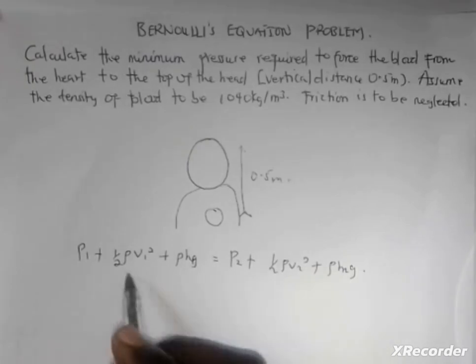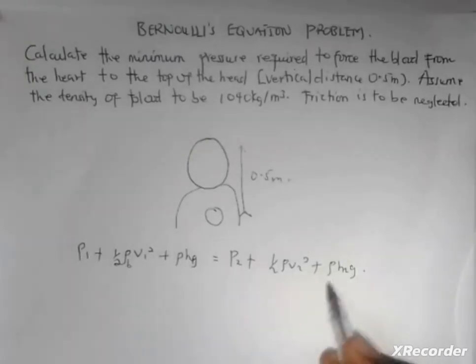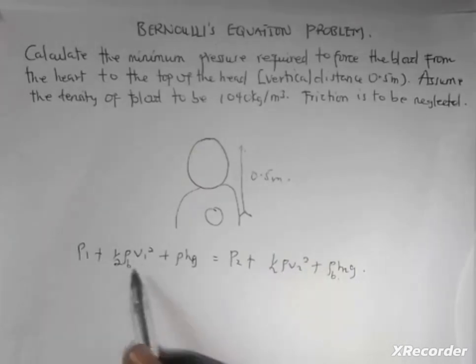The density here is the density of blood. Now we consider our situation. In our scenario, the initial and final velocities will be the same, hence the velocity terms vanish - that is, the change in velocity is zero.